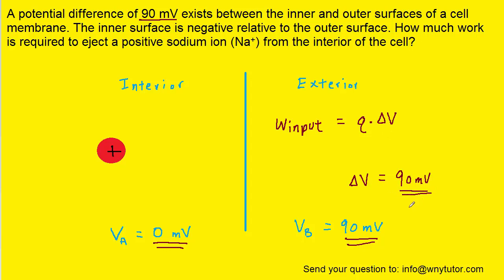We've already noted the potential difference is 90 millivolts. We do have to make sure we convert that into volts by multiplying it by 10 to the minus 3. So that would be the standard unit that we'll use.